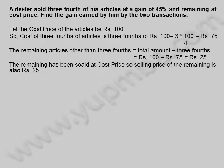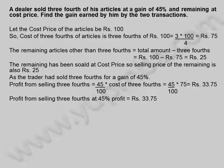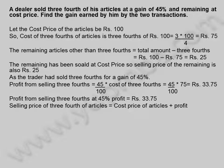The remaining has been sold at cost price, so the selling price of the remaining is also 25 rupees. As the trader had sold 3/4 for a gain of 45%, profit from selling 3/4 is equal to 45/100 into cost of 3/4, equal to 45/100 into 75, equal to 33.75 rupees.